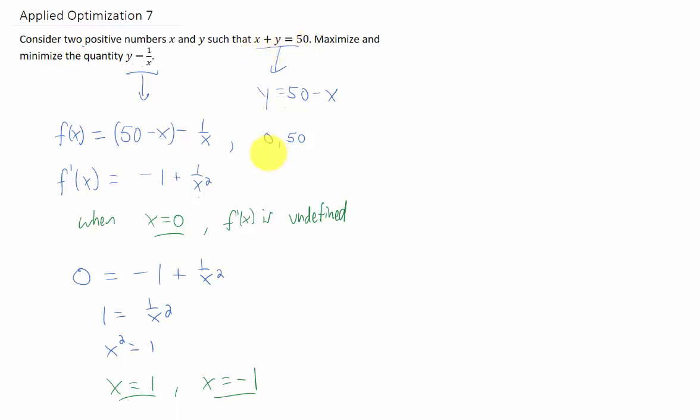Now when we're dealing with finding absolute maxima and minima of a function on an interval, that interval really should be closed. But if x and y both have to be positive, then this interval wouldn't allow us to include x equals 0, because 0 is not a positive number. The interval would also not allow us to include x equals 50, because that would make y equals 0.